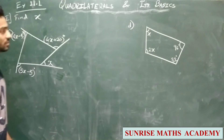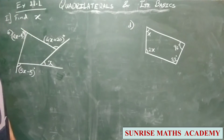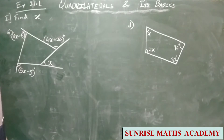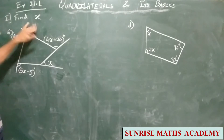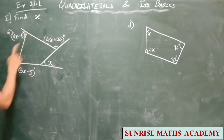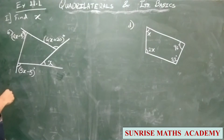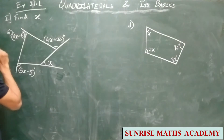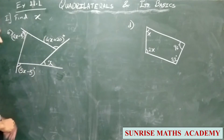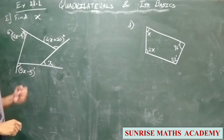Hello students. Here we will be seeing some questions on cyclic quadrilaterals and polygons. The first question: find the value of X. You can see the figure — it is a four-sided figure and the exterior angles are given with respect to variable X.